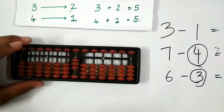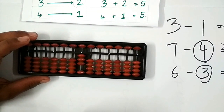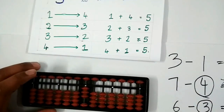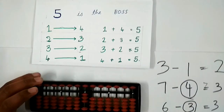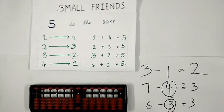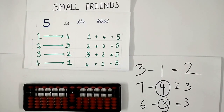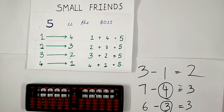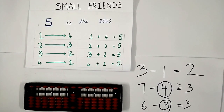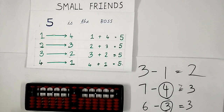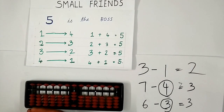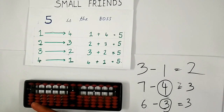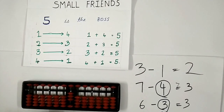Hope you have understood how to subtract numbers using small friends. It is very easy and all it needs is a little practice. In my next video I will explain how to add numbers using the big friends concept and also give you some tips to increase your speed and accuracy. If you have any doubts or want to give feedback, kindly comment below — your opinion means a lot to me. Thank you for watching.